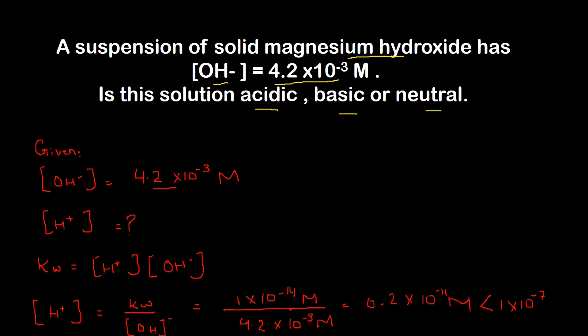Yeh value 0.2×10⁻¹¹ molar jo hai, wo less than hai 1×10⁻⁷ ke. Kyunki hum jantay hain: jab hydrogen ion ki concentration 1×10⁻⁷ ho toh neutral, jab greater than 1×10⁻⁷ ho toh acidic solution kehlata hai, aur jab less than 1×10⁻⁷ ho toh basic solution kehlata hai. Yahaan par 0.2×10⁻¹¹ molar smaller hai as compared to 1×10⁻⁷, yehi wajah hai ki yeh solution basic solution kehlata hai.